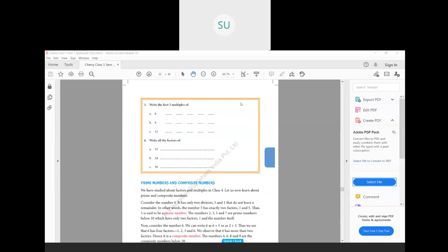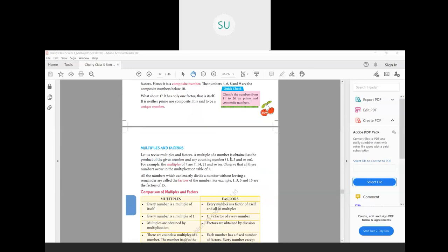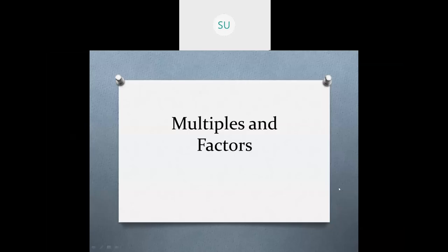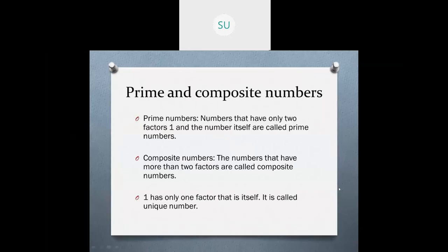Now we'll study what are prime numbers and composite numbers, and we'll do a comparison between multiples and factors. So what are prime numbers? Some numbers, for example 2, have only 2 factors: 1 and 2 itself. It doesn't have any other factor. Same way 5 — the factors of 5 are only 1 and 5. So whenever a number has only 2 factors, that is 1 and the number itself, those numbers are called prime numbers.